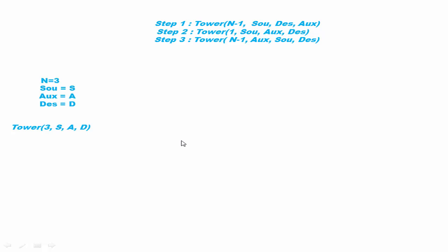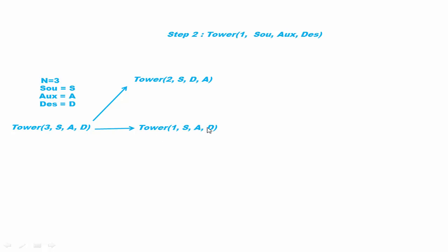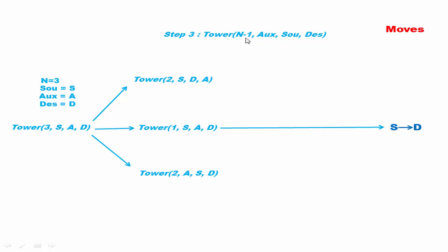We have three recursive steps and we apply them here. With n=3, source=S, auxiliary=A, destination=D: applying step one gives tower(2, S, D, A) — since n-1 is 2, source is S, destination is D, and auxiliary is A. Applying step two gives move from S to D. Applying step three gives tower(2, A, S, D).